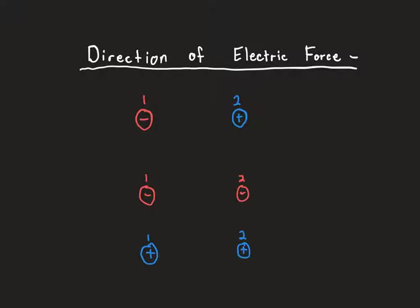Let's do a brief discussion of how to find the direction of an electrical force. We can find the magnitude using Coulomb's Law: the magnitude of the force equals k times the magnitude of charge 1 times the magnitude of charge 2, divided by the separation squared. That's only going to give us the magnitude — how big this force is.